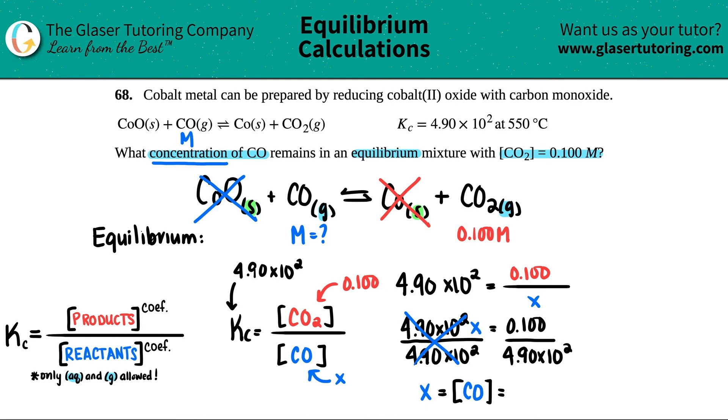Let's do this math: 0.1 divided by 4.90 times 10 to the second. In this case, I'm going to round my answer. I see that I have three sig figs and three sig figs, so I'm gonna give my answer three sig figs. So 2.04 times 10 to the negative fourth, and that's molarity. And we are done.